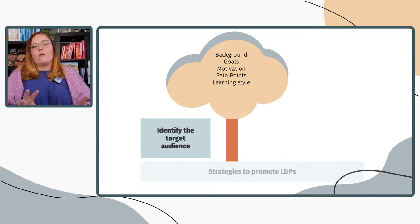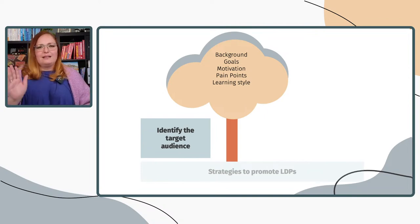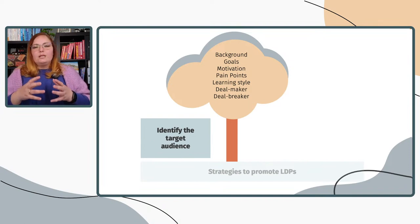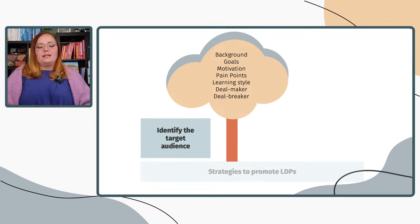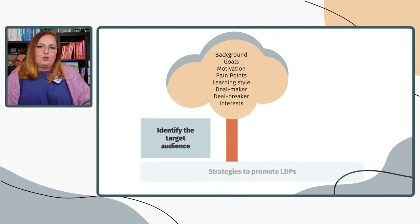Don't come for me about learning styles — it's a whole discussion; it's not as simple as dismissing them entirely. What else would you try to understand? Something we call deal maker and deal breaker — essentially, what would compel your potential learners to sign up, and what would put them off? And then their interests, just to round up who you're talking to.